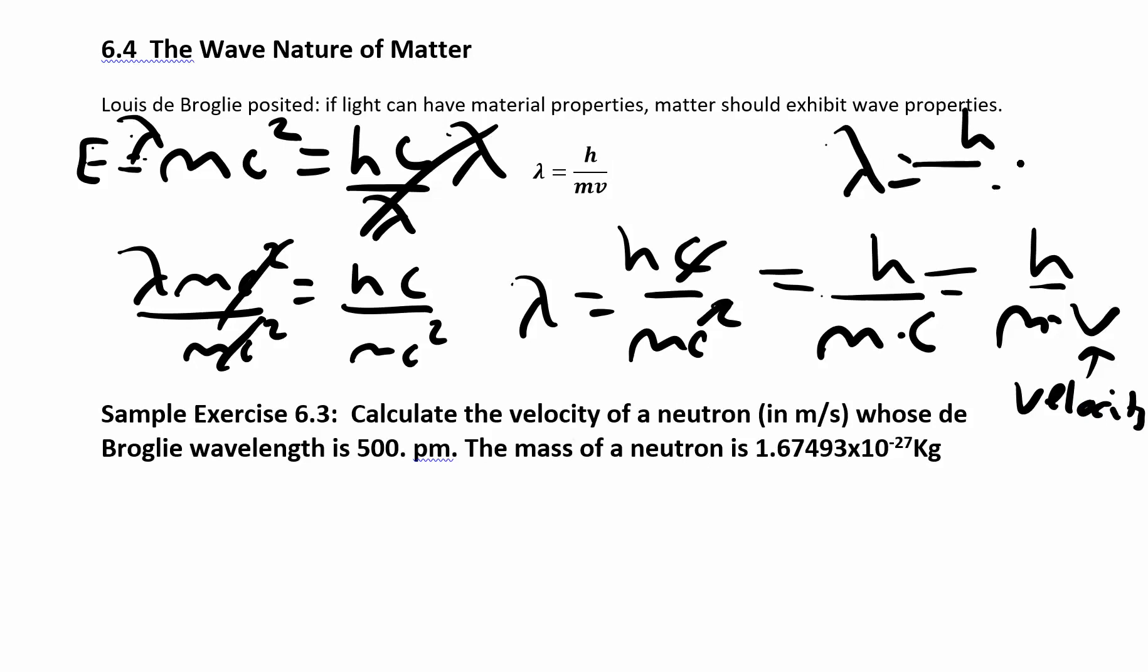Lambda is equal to h, which is still Planck's constant, divided by mass times velocity. That's the de Broglie wavelength.